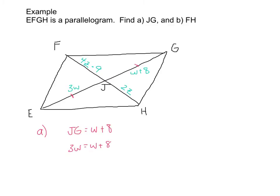And now solving for W, we can subtract the W over to see we have 2W is equal to eight. We can divide by two. And thus we see that W is equal to four.